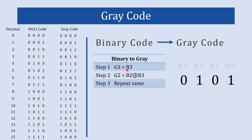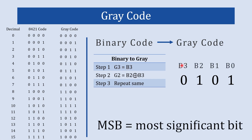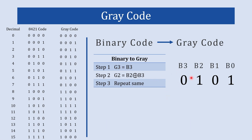In step one, g3 is the same as b3. Here, b3 is the MSB of binary code and g3 is the MSB of gray code. So the MSB of gray code will be the same as the MSB of binary code. For our number 0101, b3 is 0, so we write 0 as g3.